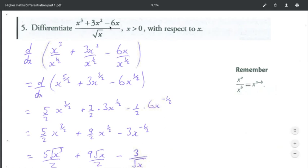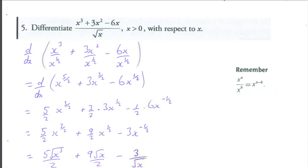So we're going to split this up into three separate fractions. So x cubed over x to the half, 3x squared over x to the half, minus 6x over x to the half. Okay, obviously there we've rewritten the square root of x as x to the power of 1 half. One of our national five indices rules that we are aware of.